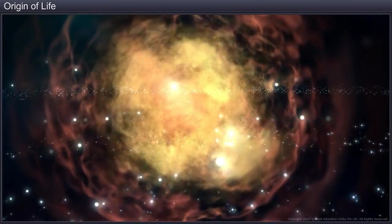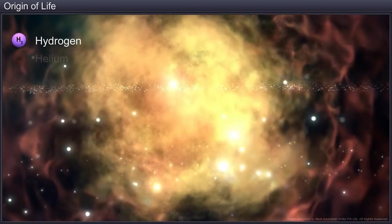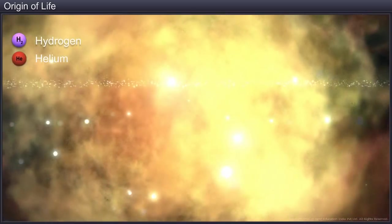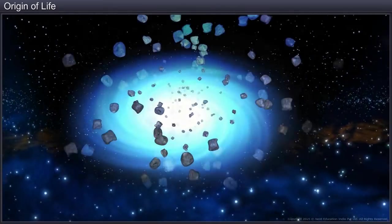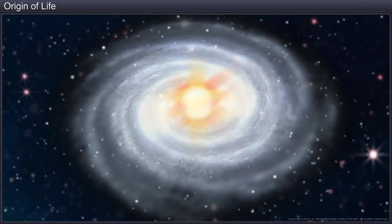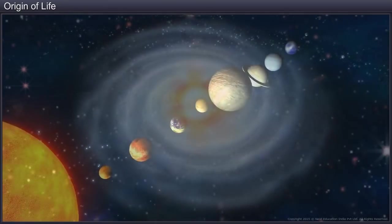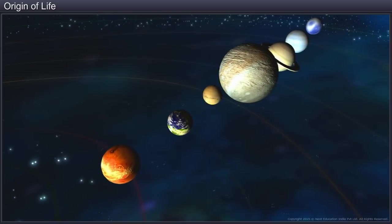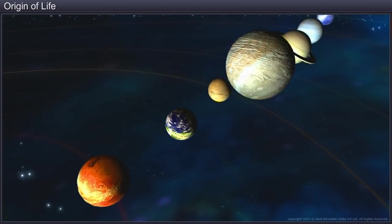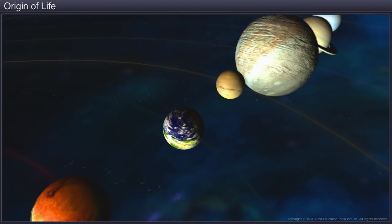After the passage of time, gases such as hydrogen and helium got formed. They condensed due to gravitation and gave rise to different galaxies in the universe. One of the galaxies known to us is the Milky Way, which contains the solar system and the earth is one of the planets in the system.